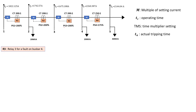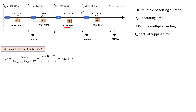Relay 3 has a plug setting of 200% and a CT ratio of 200 to 1, compared to relay 4 which has a CT ratio of 250 to 1 and a plug setting of 175%. We move to relay 3 looking out for the fault on bus bar 4 at 2.2 kilo amps. The first thing to calculate is M, given by the formula: I fault divided by CT ratio times the plug setting. We find M equal to 5.651. From there we calculate TC, the operating time, using TC = 3 over log M, and we find TC equal to 4 seconds.